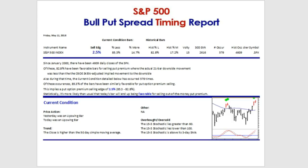Favorable where the actual downside movement over 21 bars was less than what was being implied by the CBOE skew-adjusted VIX to the downside. So 82.8% of the time, you have favorable bars for doing these bull put spreads.